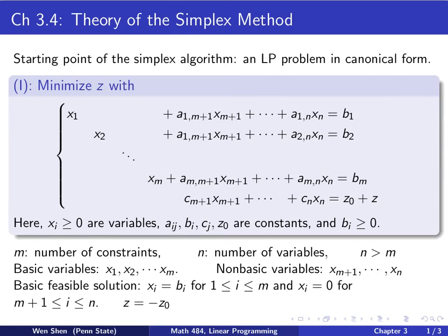The remaining are non-basic. The basic feasible solution would be xi equals bi for i from 1 to m, and the other xi's for the non-basic variables take value 0. At that basic solution, z would take the value negative z0 because the left-hand side is 0. We're familiar with that.